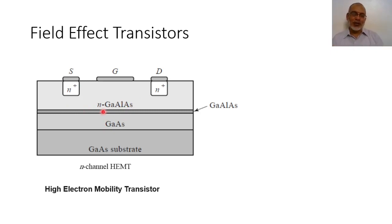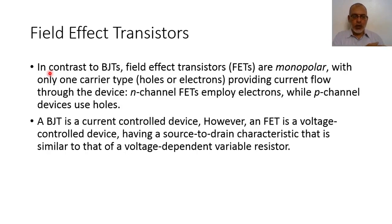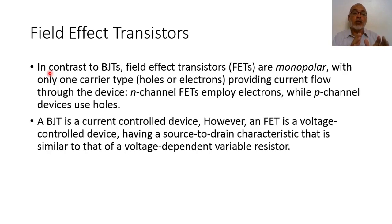Continuing with a general discussion of field effect transistors for microwave engineering: in contrast to the bipolar junction transistor, field effect transistors are monopolar, meaning we have a single carrier type from the source to the drain. Along the entire channel we have just one carrier type — either holes or electrons depending on P-type or N-type. We usually use N-type.